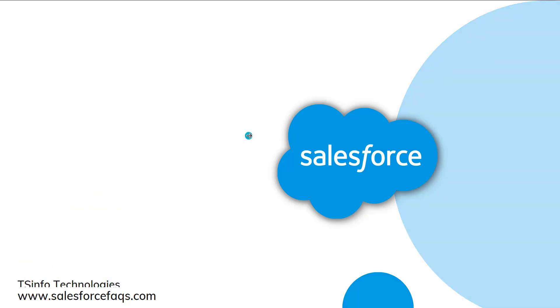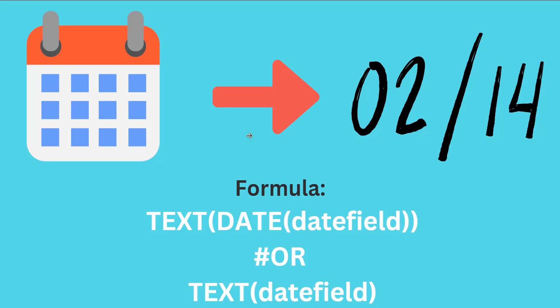Let's proceed by understanding how we convert the date to text in Salesforce. If you want to convert the date field to a text data type, we have two different formulas. The first one is to use both the TEXT and the DATE function together — we fetch the date using the DATE function and then pass it to the TEXT function to convert it into text.